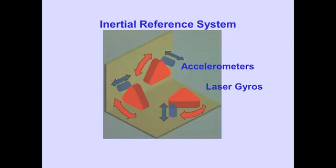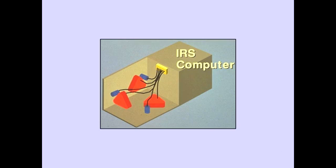The Inertial Reference System uses accelerometers and laser gyros to measure airplane movement in all three axes. The movement is then sent to an IRS computer for processing.